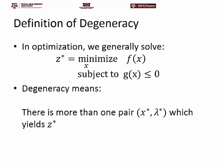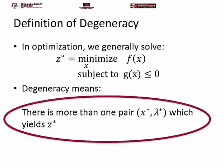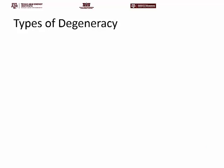Degeneracy means that there is more than one pair (x*, λ*) which yields the optimal objective function value z*. So there is more than one pair that you can substitute into the problem which yields your z*. This is the key concept, and it's obvious that if such degeneracy occurs then this might have a huge impact on your solution strategy.